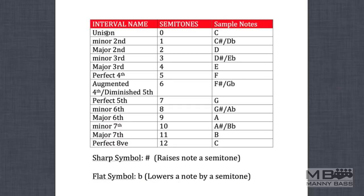So what happens when you play a note but you don't move? You stay in the same spot. In this case, you play a C and then you play the same C. That's called unison. The next interval is called a minor second. A minor second is always one fret away. If you're looking at C, a minor second will be a C sharp or a D flat. Two frets away will be a major second. In the case of C, a major second will be D.